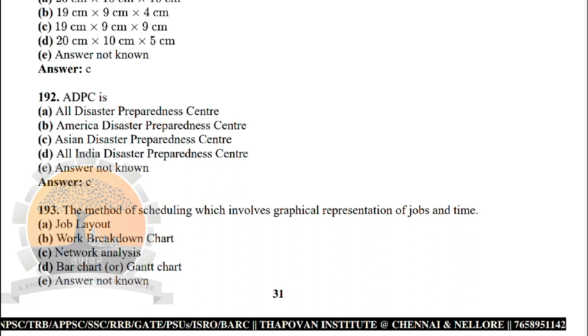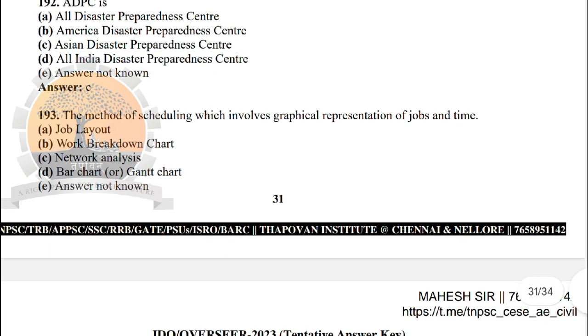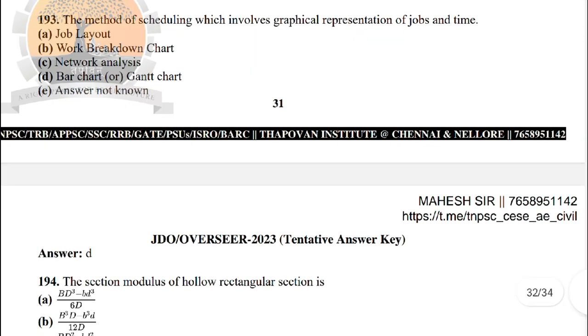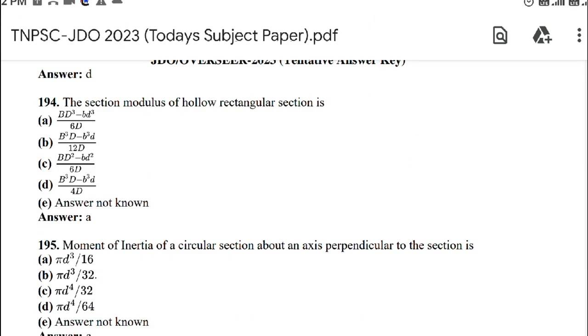Next: ADBC is — the correct answer is option C: Asian Disaster Preparedness Centre. Next: in the method of scheduling which involves graphical representation of jobs and time, the correct answer is option D: bar chart and Gantt chart.